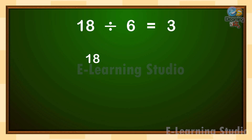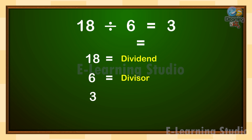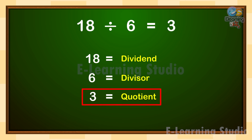In a division, the first number is called the dividend, the second number is called the divisor, and the answer is called the quotient. So in this example, 18 is the dividend, 6 is the divisor, and 3 is the quotient.